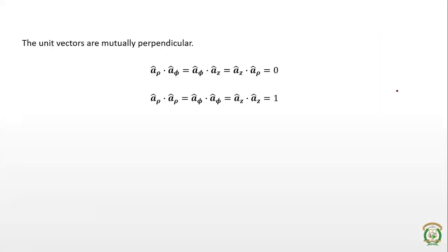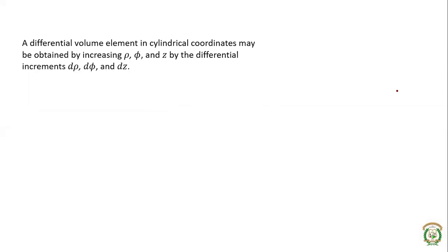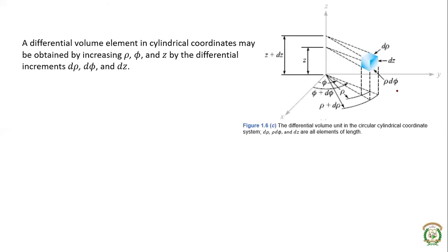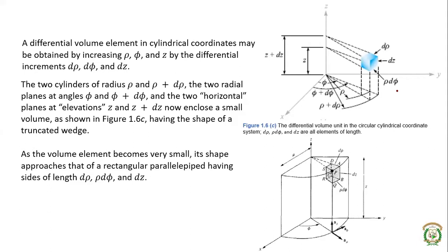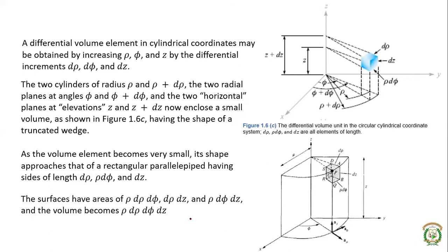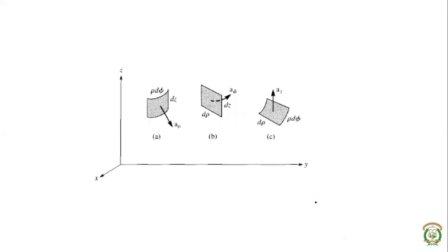We also saw the unit vectors in cylindrical coordinates: a_rho, a_phi, and a_z, along with operations on them — dot product and cross product. We then covered the differential volume element in cylindrical coordinates, including differential lengths and differential surfaces. The product of all the lengths gives the volume element.